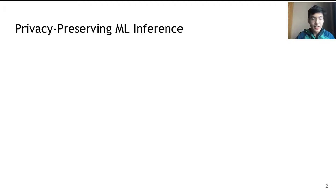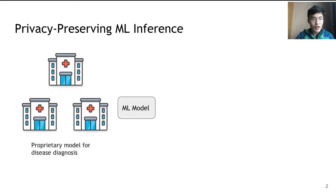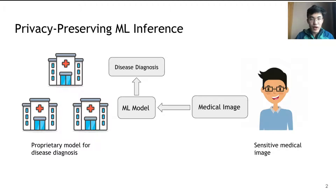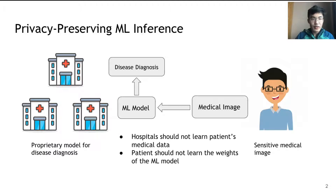For example, in the case of privacy-preserving machine learning inference, multiple hospitals hold a proprietary model for disease diagnosis, and there is a patient who holds a sensitive medical image and wants to determine the disease he has. The patient sends the medical image to the machine learning model, which outputs a disease diagnosis. For inference to be private, hospitals should not learn about the patient's medical data, and the patient should not learn about the weights of the machine learning model.